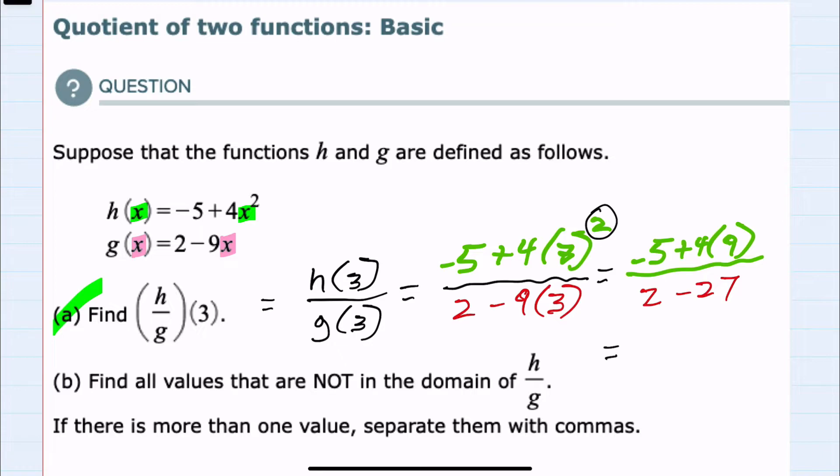From here, back in the numerator, I can now do the multiplication: -5 + 36. In the denominator, 2 - 27 = -25.